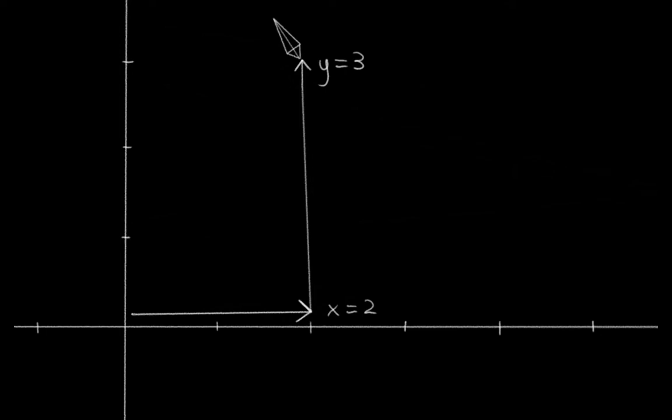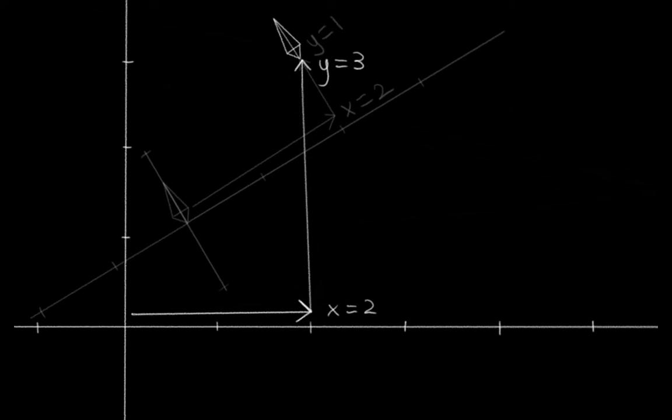On the other hand, if its rest position in edit mode was off here somewhere, oriented at an angle, then the local space translation of the bone might be x equals 2, y equals 1. One way to think of this is to say that world space is the absolute coordinates of a bone in the scene, whereas local space is the relative coordinates of a bone compared to its resting pose.